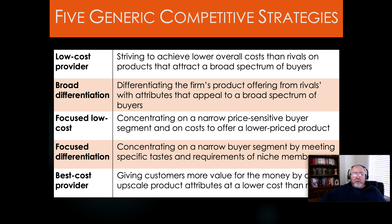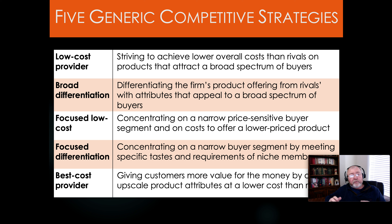In general, there are five main generic competitive strategies that companies might opt to pursue. The first, covered in the prior lecture, was being a low-cost provider — meaning the company strived to achieve lower overall costs than rivals on products that attract a broad spectrum of buyers, looking for market share and profit based on large volume and low cost — low cost to produce, low cost to the buyer.